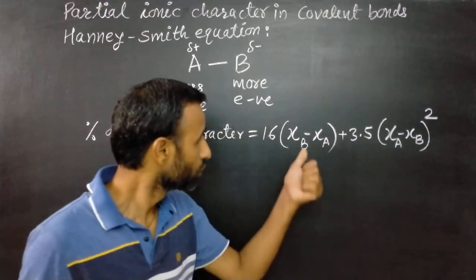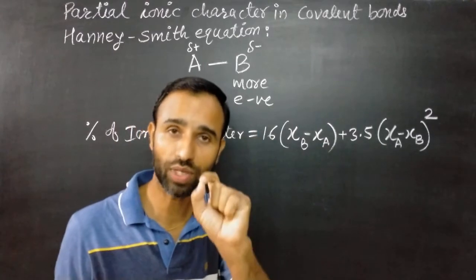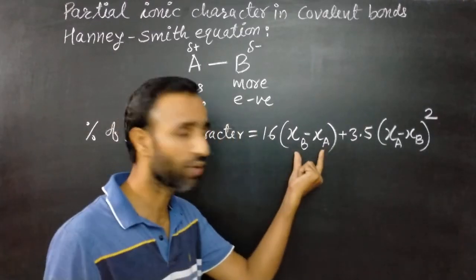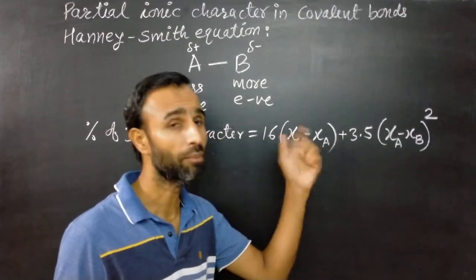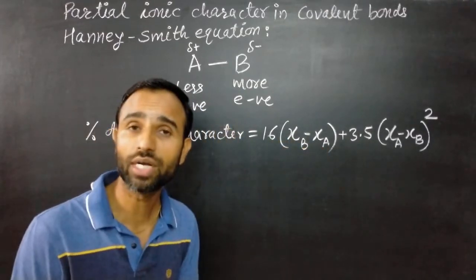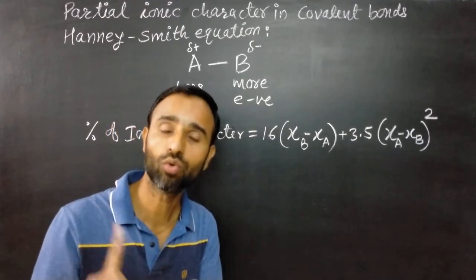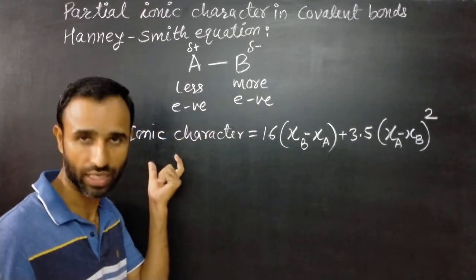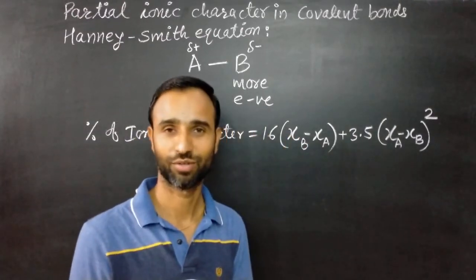This is more electronegative and this one is less electronegative. Always we write it like that. It is always positive and this is difference in electronegativity. They used the difference in electronegativity between A and B to calculate percentage of ionic character. And this is called Hanne-Smith equation.